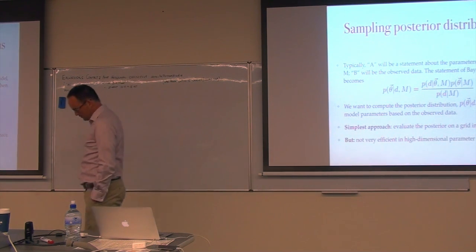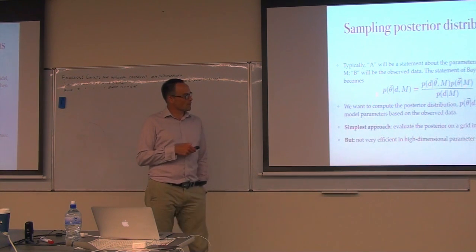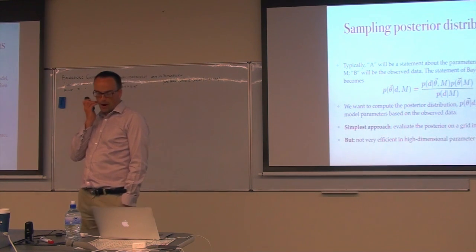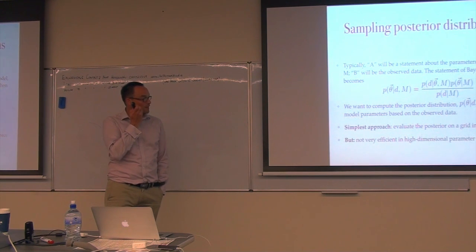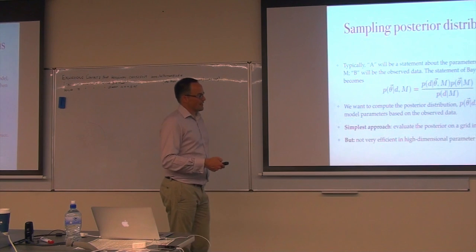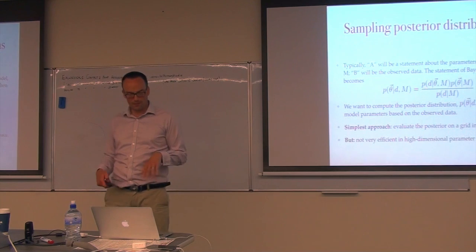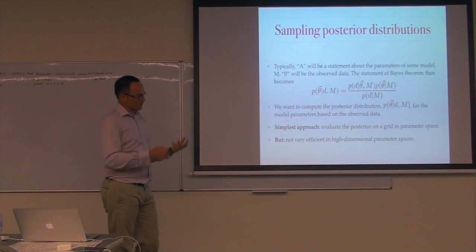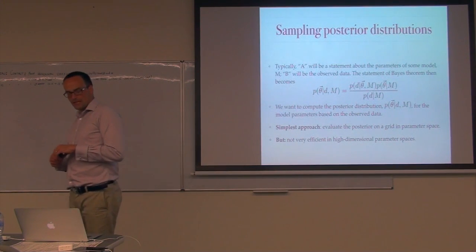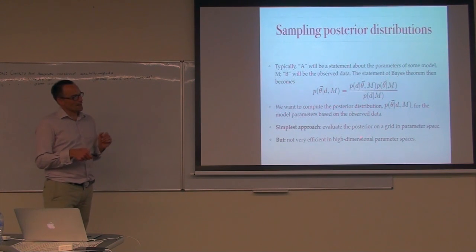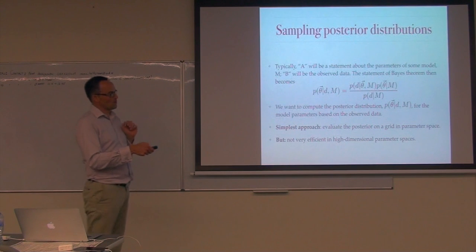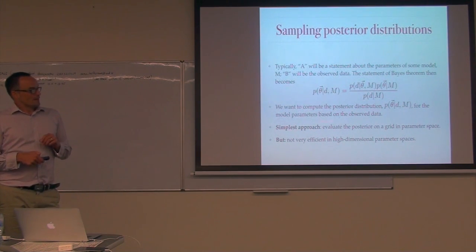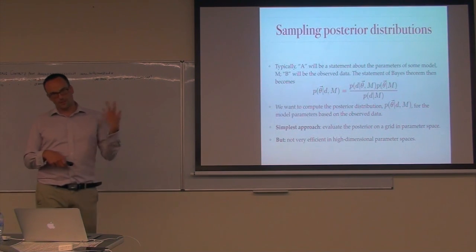We want to work out our distribution of parameters of a source given what we've observed, given by Bayes' theorem as the likelihood times the prior, normalized by the evidence. One way to evaluate that is to consider a grid of points in your parameter space: for each choice of theta you calculate the likelihood and prior and get a number, giving you a posterior distribution. That becomes increasingly impractical as you go to larger numbers of dimensions — if you need 100 points in each dimension and you have 10 dimensions, that's 10^20 evaluations. So grid-based approaches become increasingly inefficient in high dimensions, though they're the right thing to do in low dimensions.